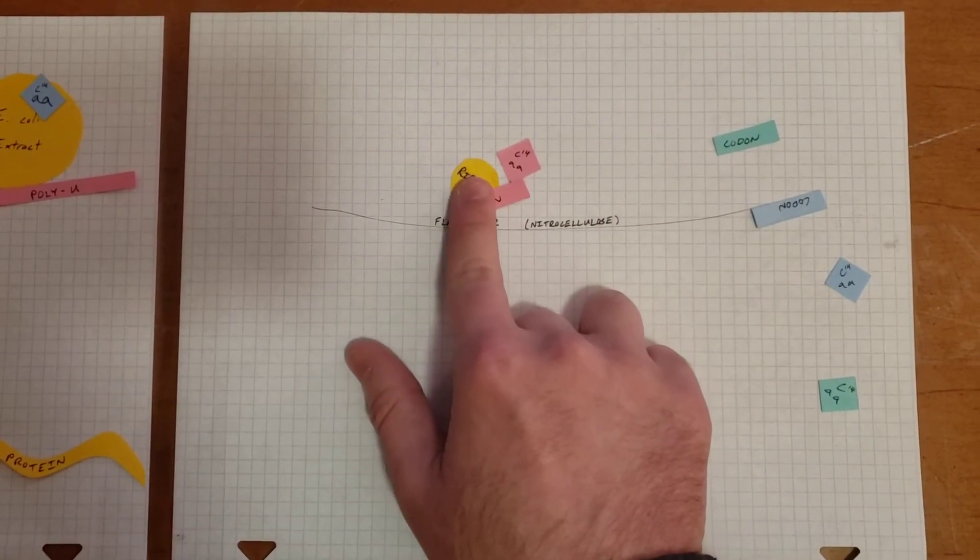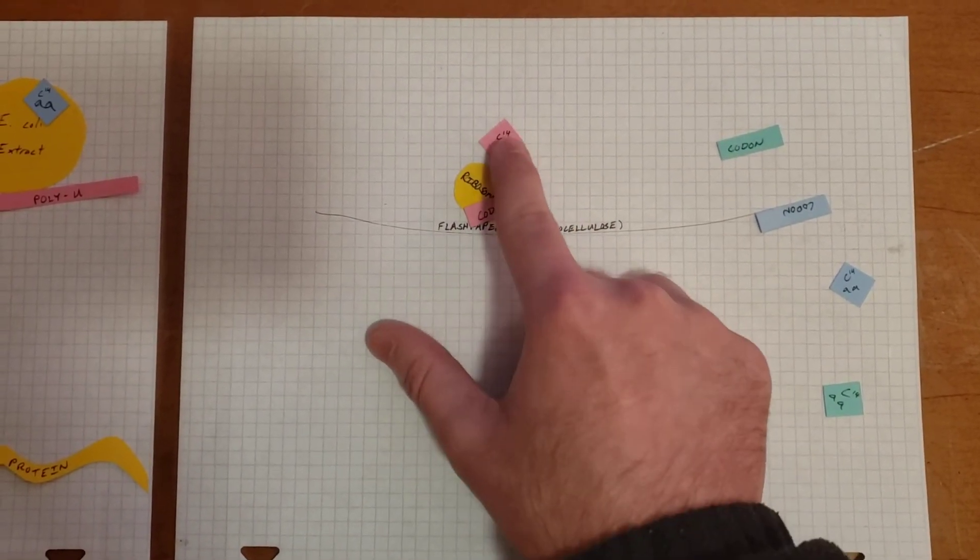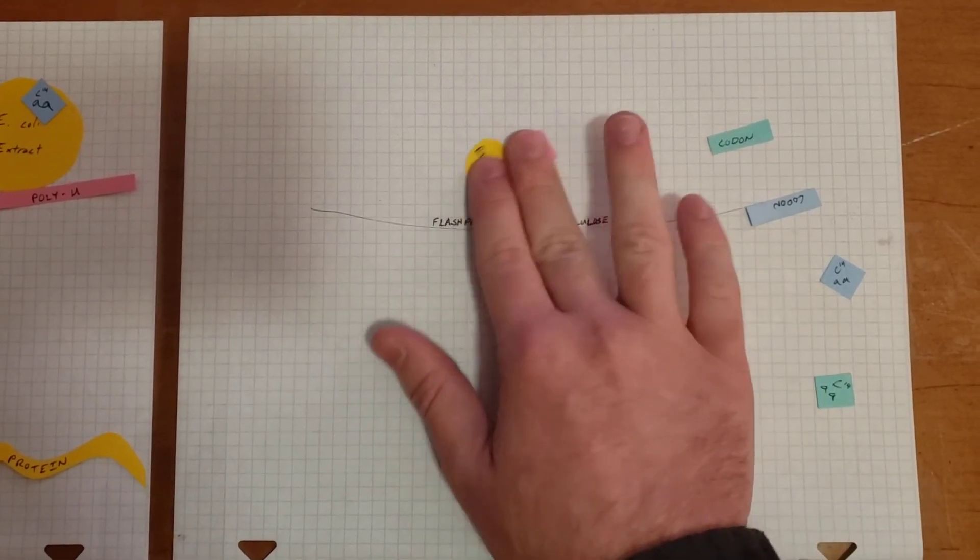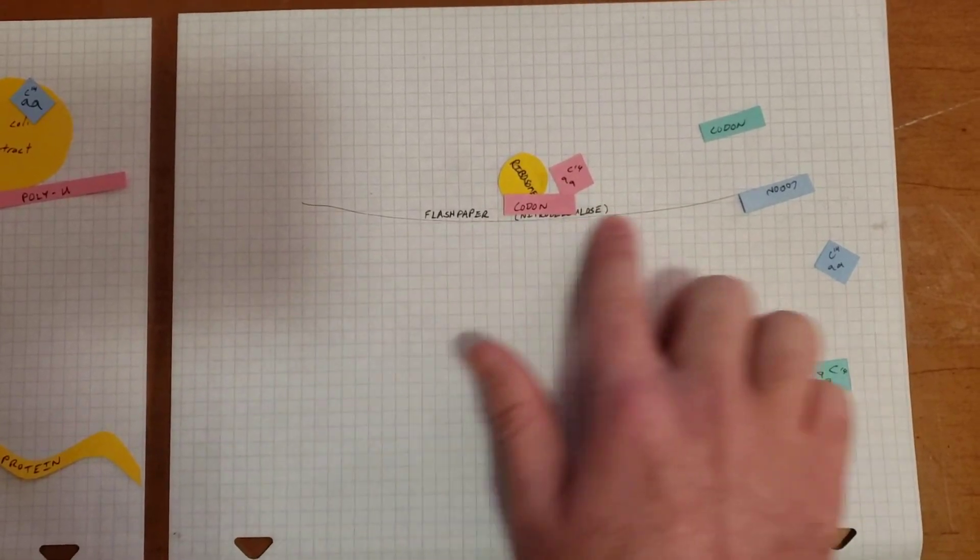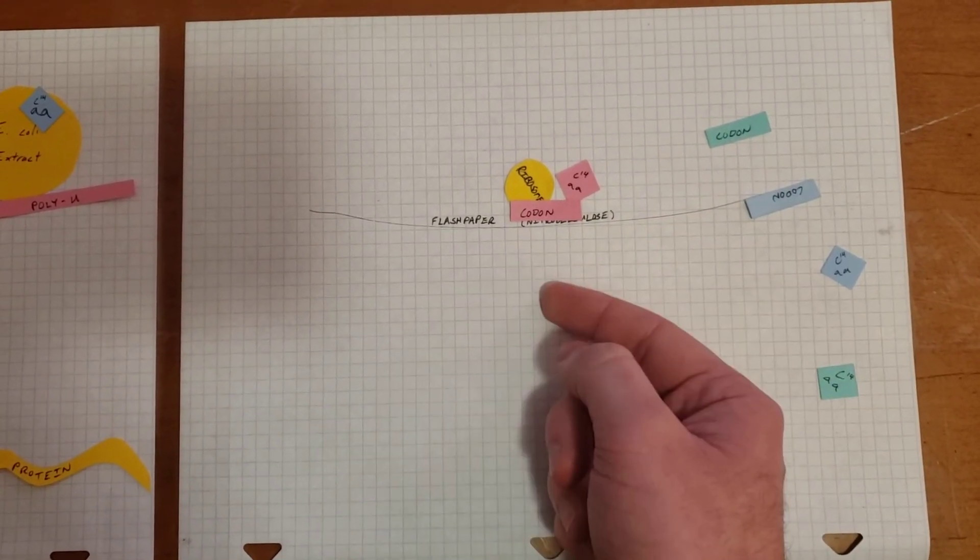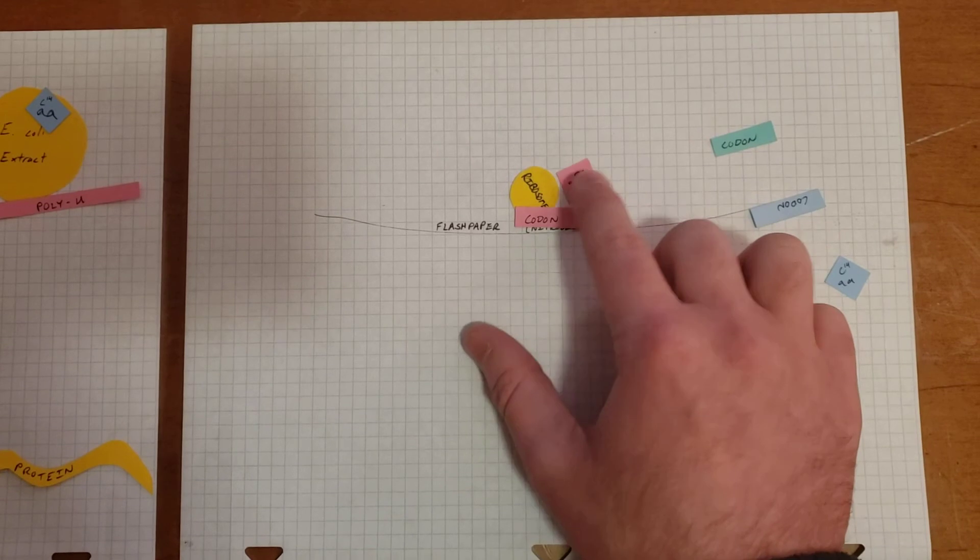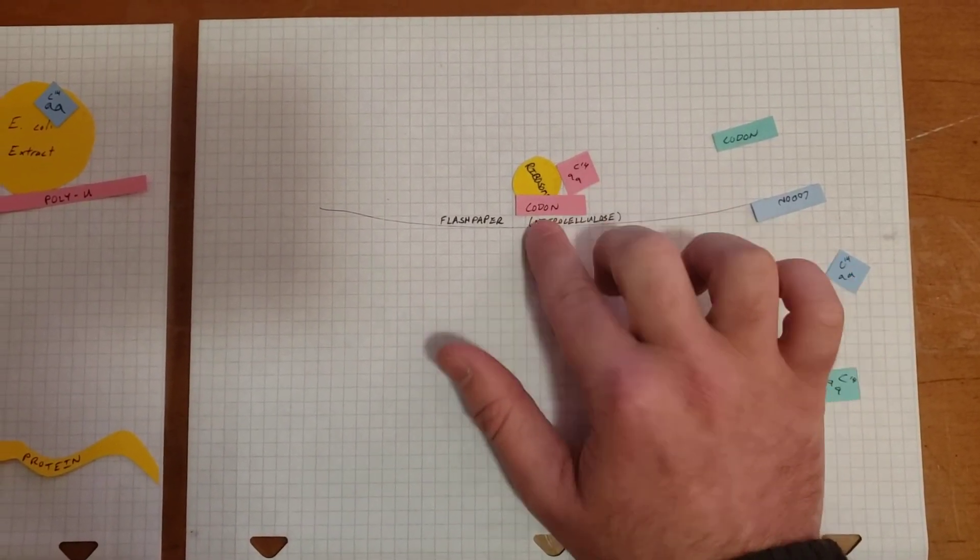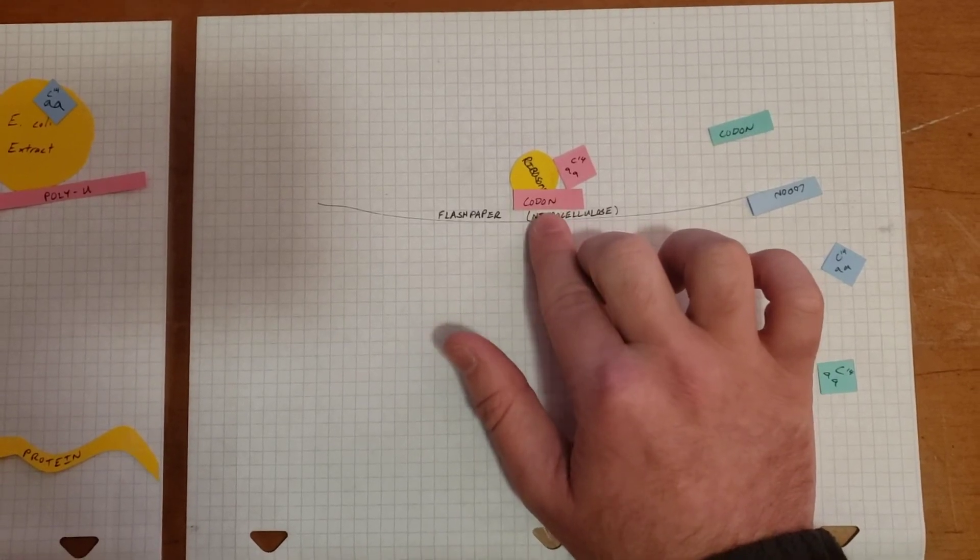This codon was in the ribosome, and it managed to complex with a tRNA that was attached to this hot amino acid, and it stayed on top of the flash paper. The flash paper was radioactive, so they knew, since this had complexed with this and stayed on top, that this amino acid was coded for by this specific codon.